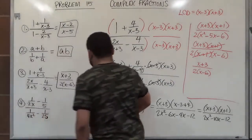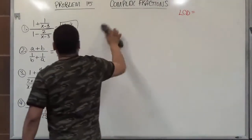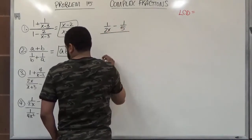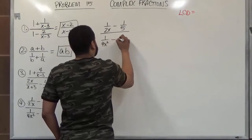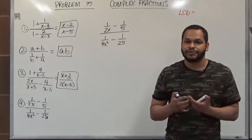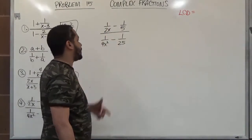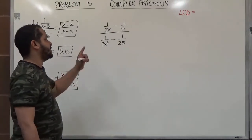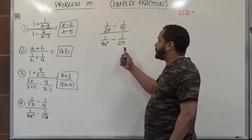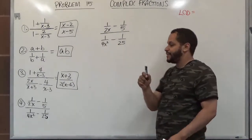Let's move on to our final question. That one was a bit challenging — hopefully the next one is friendlier. We'll be using the LCD trick to reduce these complex fractions. Here we have 1 over 2x minus 1 over 5, divided by 1 over 4x squared minus 1 over 25. Every denominator plays an integral role in what the LCD is, but the LCD is a singular term. We need a term divisible by 2x, 5, 4x squared, and 25. Since 25 is not a factor of 4, we know 100 would be part of the LCD, and we also need the x squared — so the LCD becomes 100x squared.